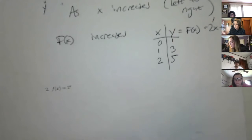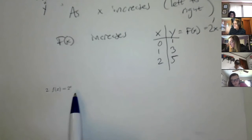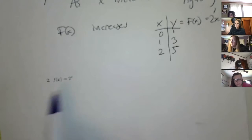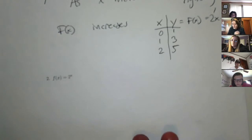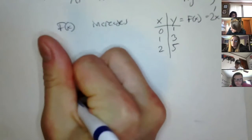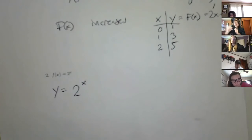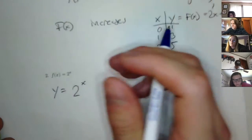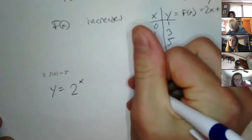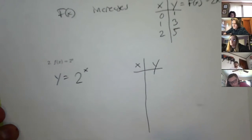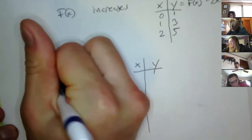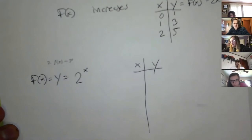Now let's look at this one down here — this is going to be a completely different kind of function. As x increases, do we have any guesses as to what this function does? Does it increase or decrease? It's 2 to the x. It increases. So for instance, if I were to make another table for this one, my f of x is equal to y here, where f of x is just the notation for the function.